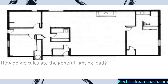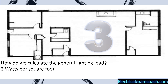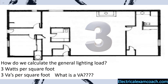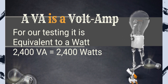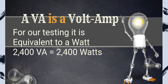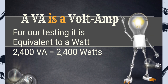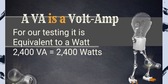The first question we have to ask is how do we calculate the general lighting load. Thankfully, they've made it very simple: we calculate it at three watts — or three VAs — per square foot. All we have to do is take the square footage of the dwelling unit and multiply it by three. A VA is a volt-amp, and for all of our testing it's equivalent to a watt, so 2,400 VAs equals 2,400 watts. For these calculations we will be using three VAs per square foot.